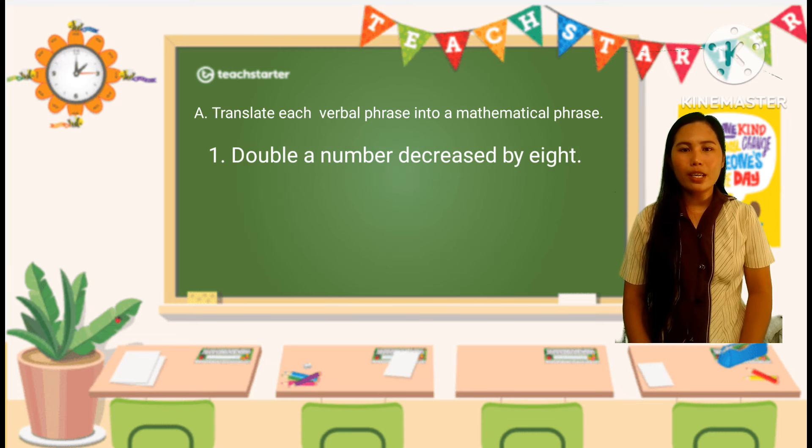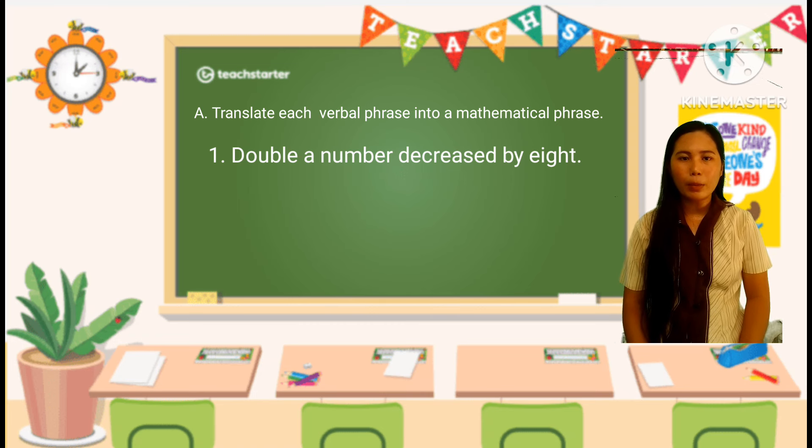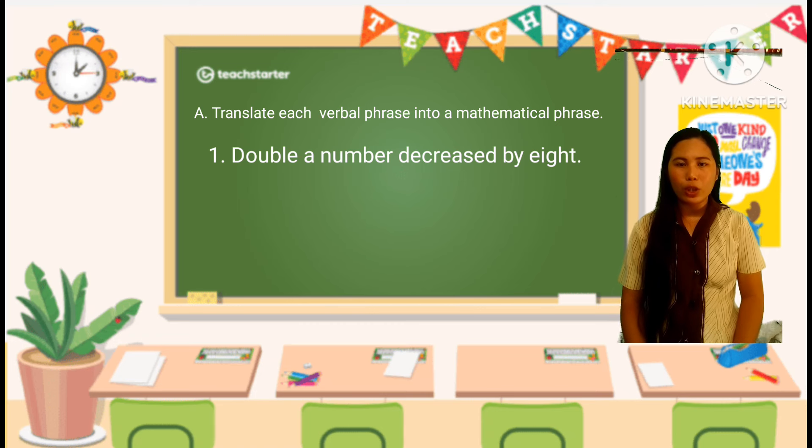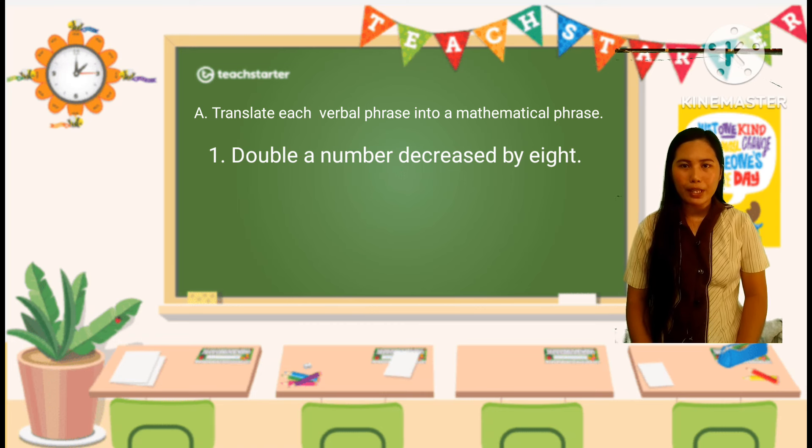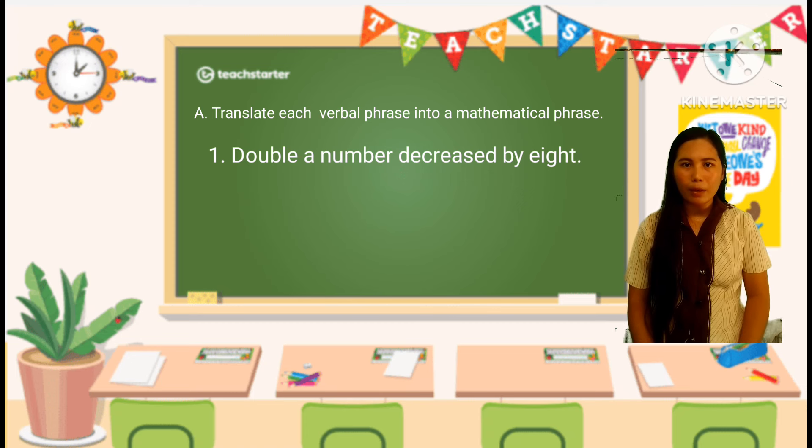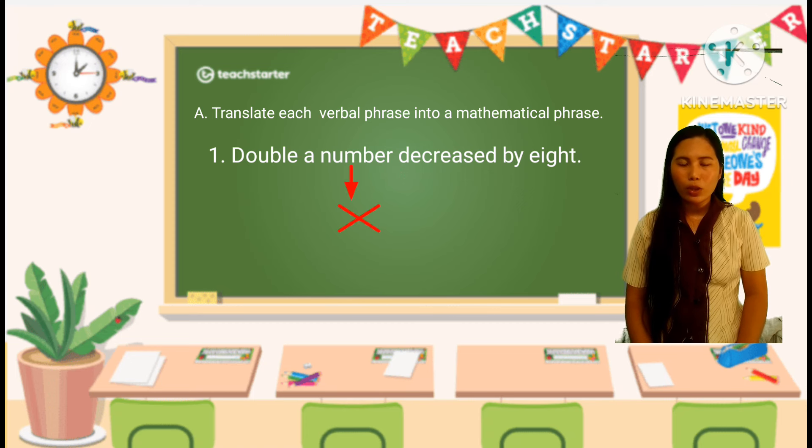So, here are the examples on how to translate verbal phrases to mathematical phrases. For example number one, double a number decreased by 8. To explain the verbal phrase, double a number decreased by 8 in mathematical terms, you could set up an algebraic expression to represent the phrase. Let x be the number we want to work with.